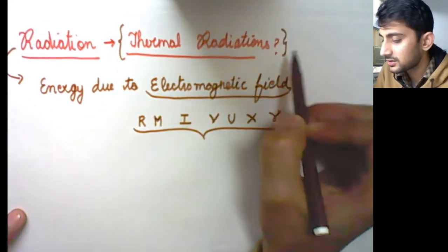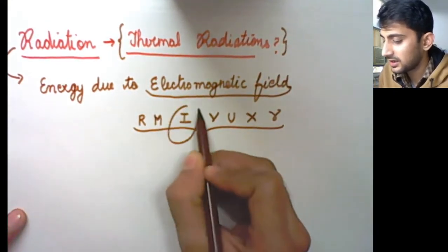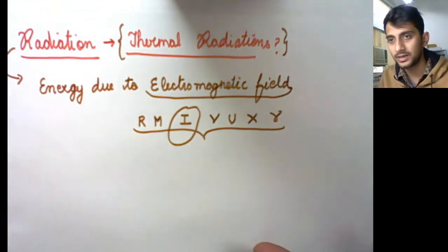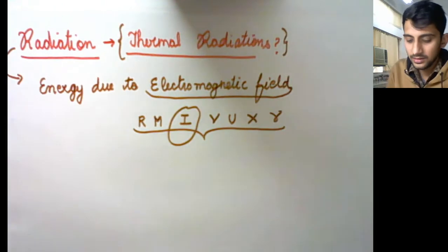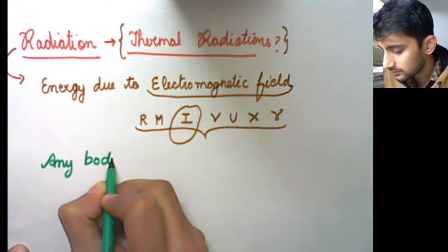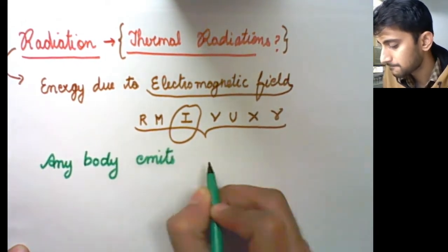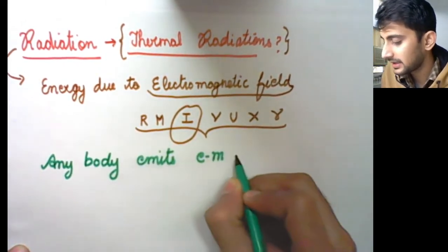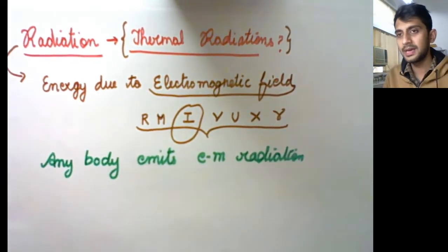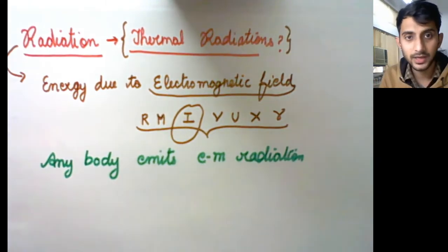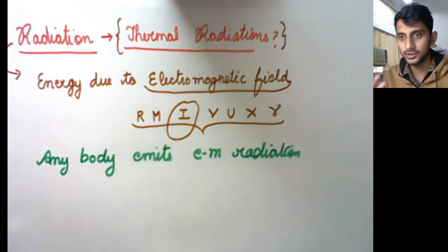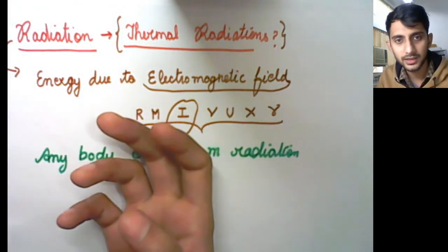Energy due to any of these lies within radiations. Thermal radiations are considered in the infrared region, which are perceivable. Any body emits electromagnetic radiation — the pen I'm holding, the paper I'm writing on, my body — all are sources of electromagnetic radiation.